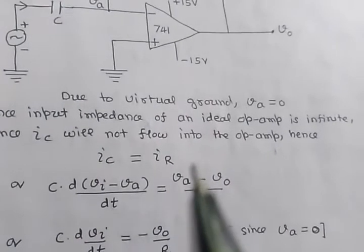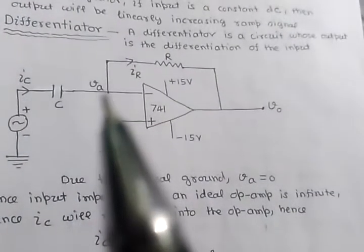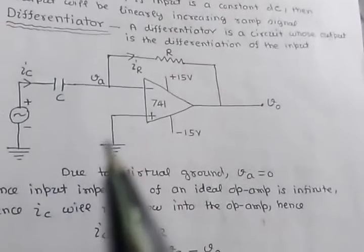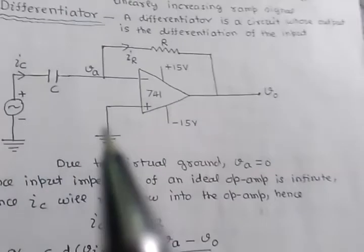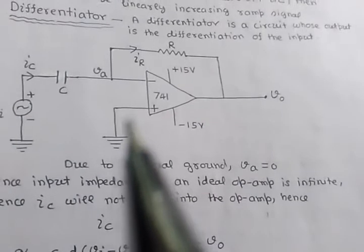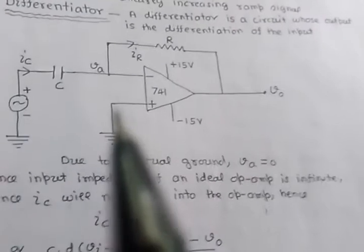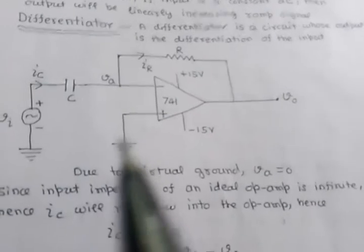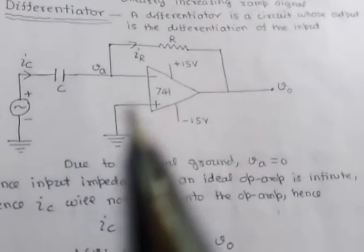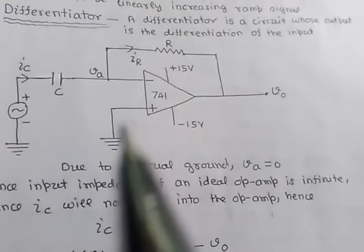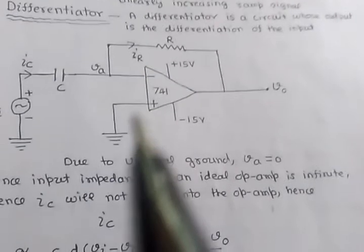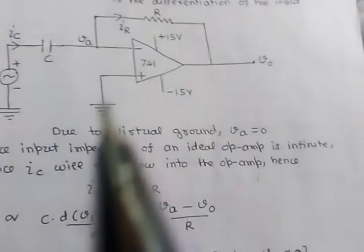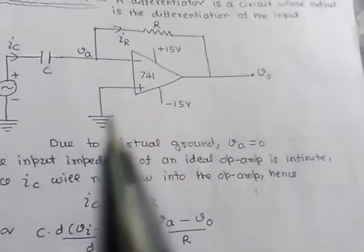Setting IC equals IR, and noting that VA equals zero due to virtual ground: since the non-inverting terminal is connected to ground, and the op-amp has infinite open-loop gain with negative feedback, its input terminals track each other. Therefore the voltage at the inverting terminal equals the voltage at the non-inverting terminal, which is zero, so VA equals zero.